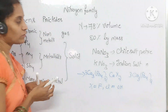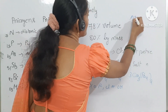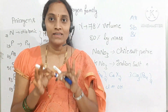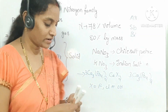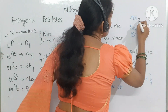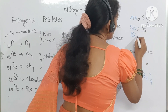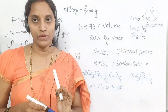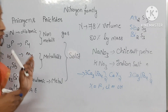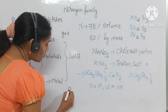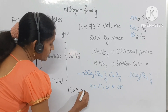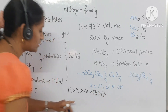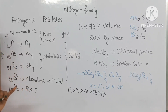Arsenic, antimony, and bismuth are available in their sulphide minerals: As₂S₃, Sb₂S₃, and Bi₂S₃ respectively. In terms of general occurrence, phosphorus is more abundant than nitrogen, followed by arsenic, antimony, and bismuth. This is the general occurrence of nitrogen family or 5A group elements.